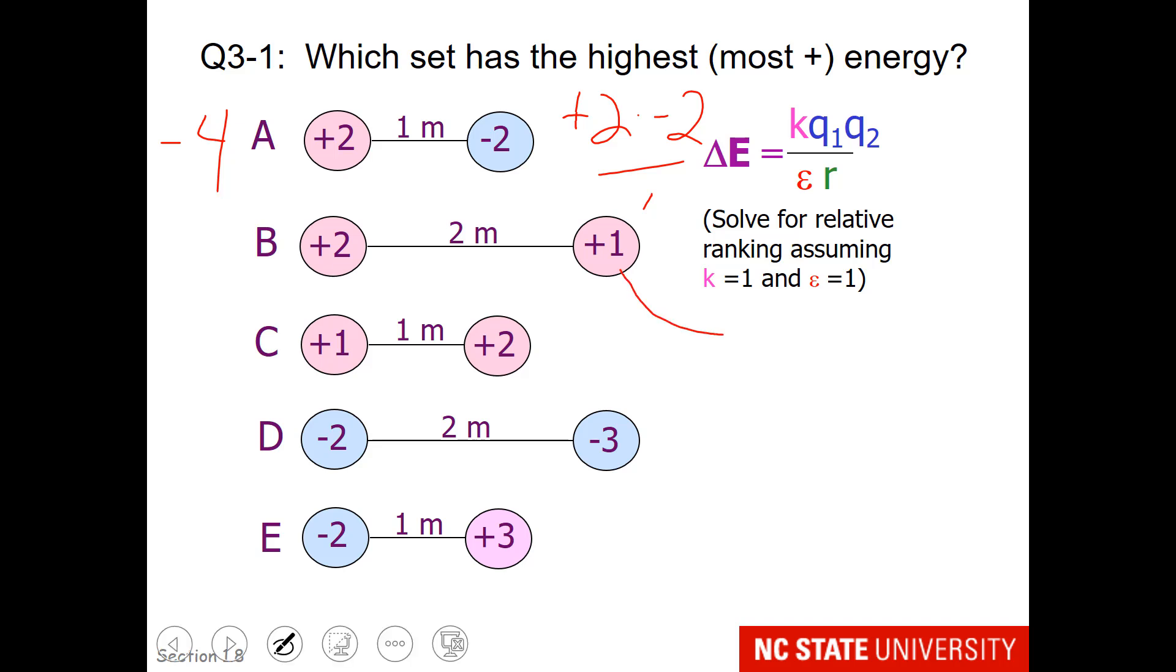For B, I would have plus 2 times a plus 1 over 2. So when I work that math, it winds up to be plus 1 in the relative ranking. So finish the rest of these, and when you finish your relative ranking, choose the one that has the most positive energy.